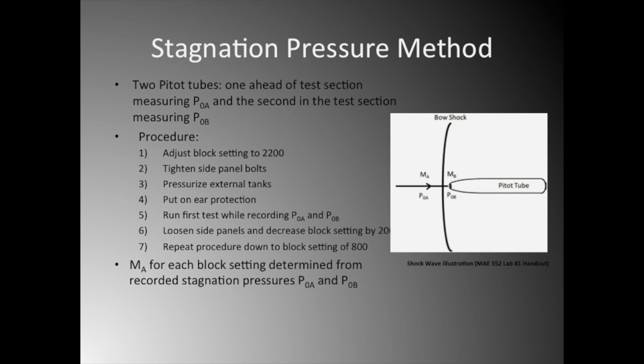The procedure for this experiment is as follows. First, adjust the block setting to 2200, then tighten the side panel bolts, pressurize the external tanks, put on ear protection, then run the first test while recording P0A and P0B on the computer. Then loosen the side panels and decrease the block setting by 200, which changes the throat area. Repeat the procedure down to a block setting of 800 by decreasing by 200 every time.